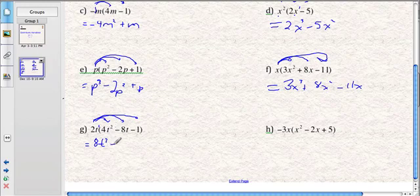The second one, 2 times negative 8, that's negative 16. So I'm still just at this term here. t and another t, so that's t squared. And then 2t times negative 1 is negative 2t, and you're done.